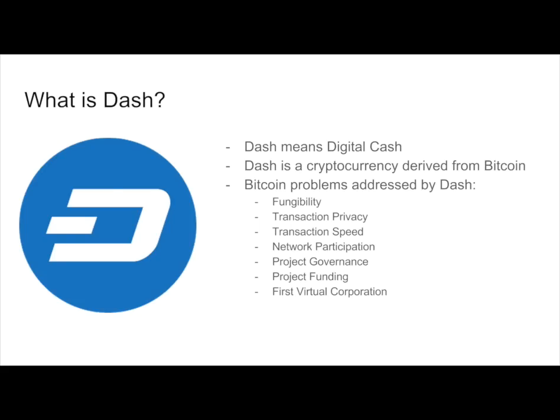What exactly is Dash? Well, Dash stands for digital cash. It's an alternative to cash that's purely on the internet, decentralized in nature and purely digital. It's also fungible, which means that any two single units of Dash are interchangeable and no one can know the difference between them because they have no history. There's also privacy on the network, very quick transaction speed using innovative features, incentivized network participation, and well-defined governance methodologies so the community can participate in decision-making.